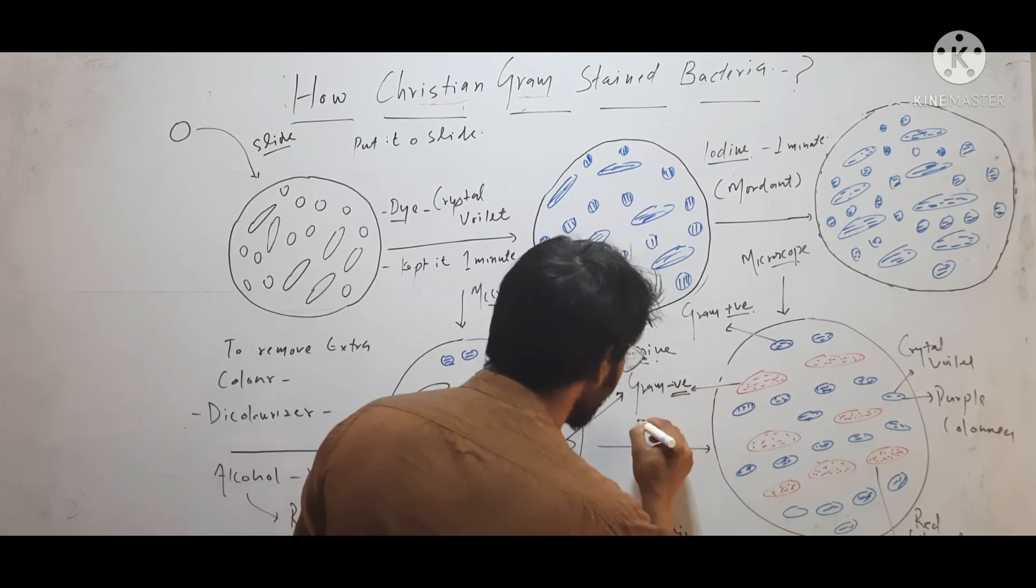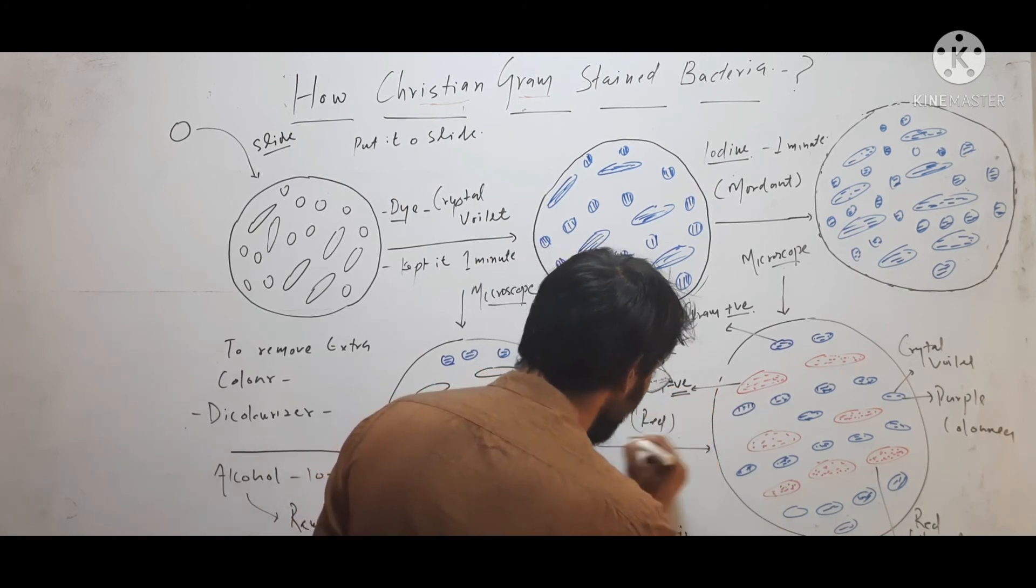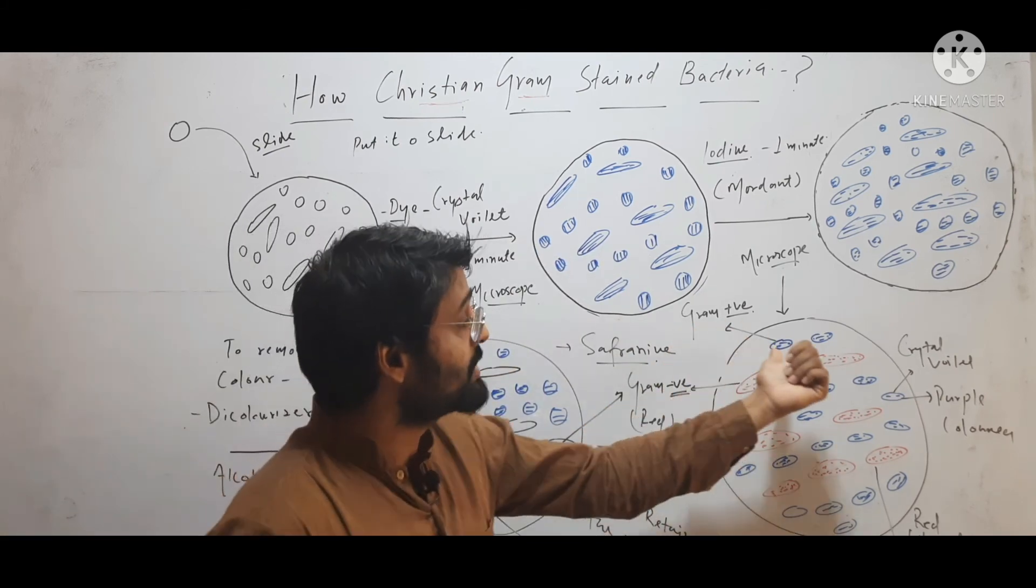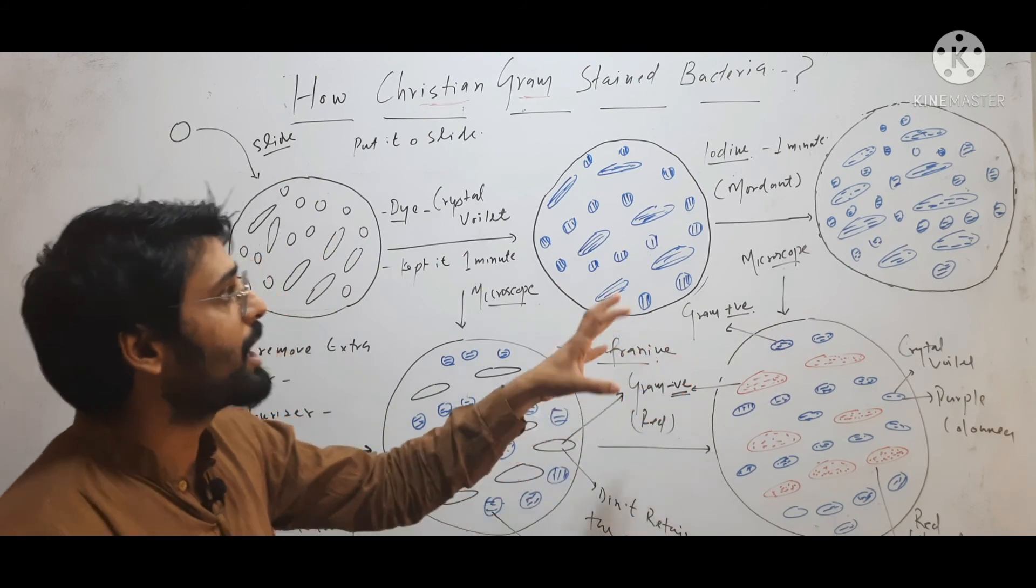These red colored bacteria were gram negative, and these purple colored bacteria were gram positive.